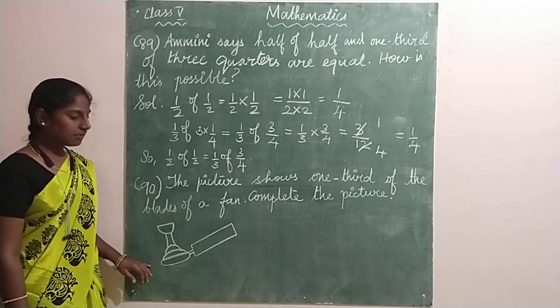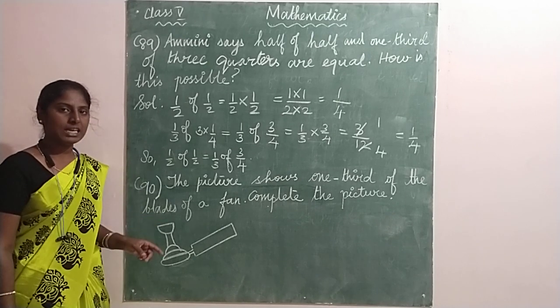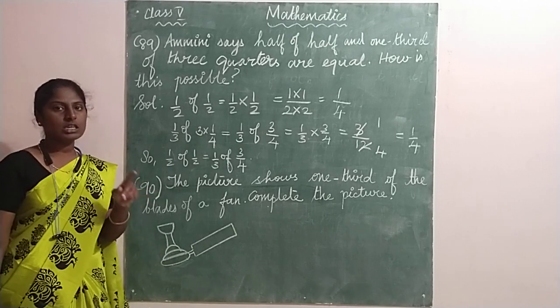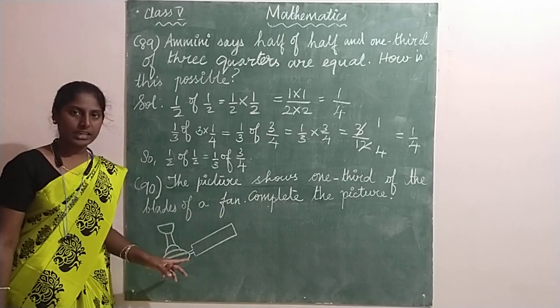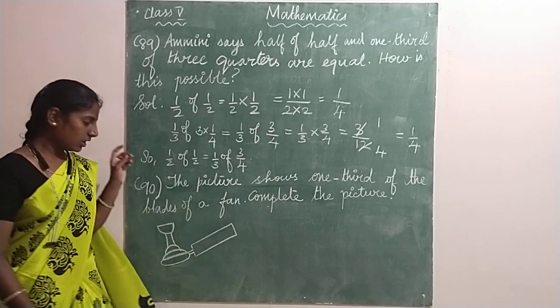Can you see the figure given here? This figure shows one third of the—what is meant by one third of the blades? One among three. So here the fan is having three blades and only one is shown in the diagram. We have to make one more diagram with complete blades.